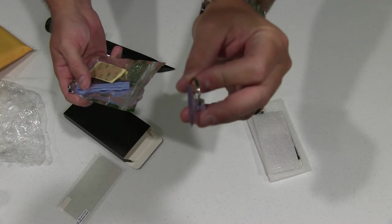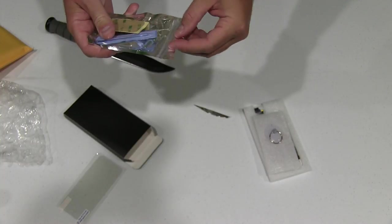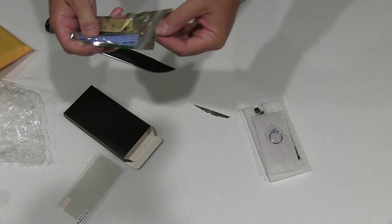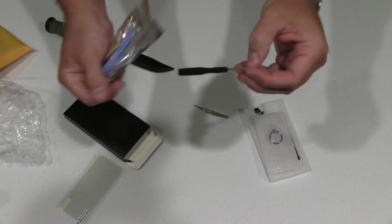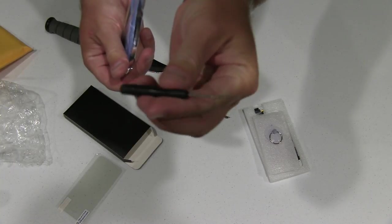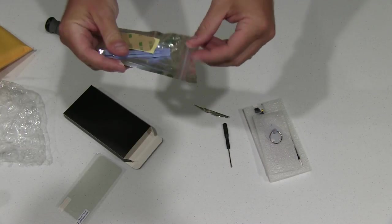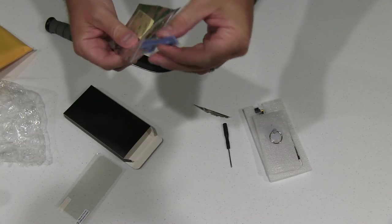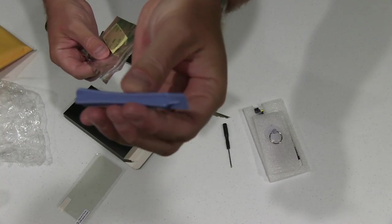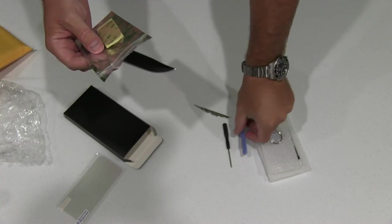You've got a suction cup for removing the screen. You've got this little screwdriver right here. You've got this little plastic piece, and I think this is probably to pry the little circuits and stuff off.